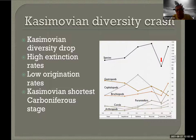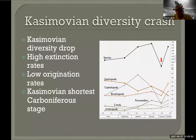One thing I worried about is that the Casimovian is the shortest stage of the Carboniferous. That would mean it might have relatively low rock volume and therefore relatively low fossil record, and we have to wonder how much of these diversity changes are simply taphonomic or depositional artifacts — that's something worth considering here.